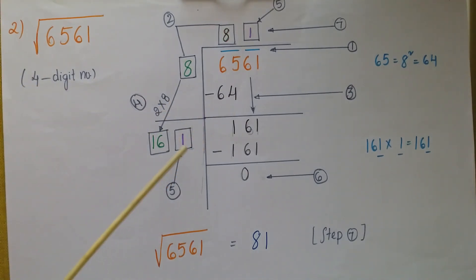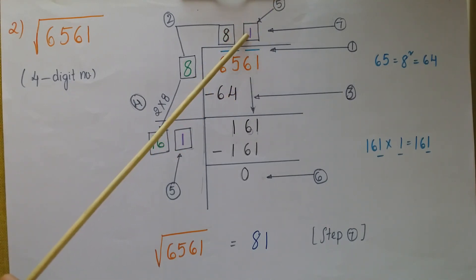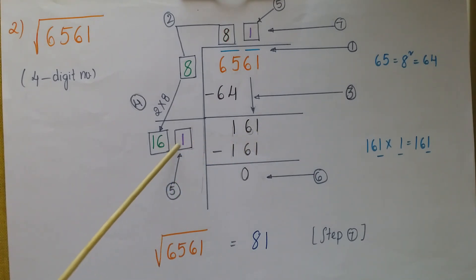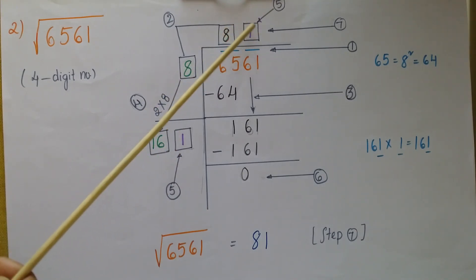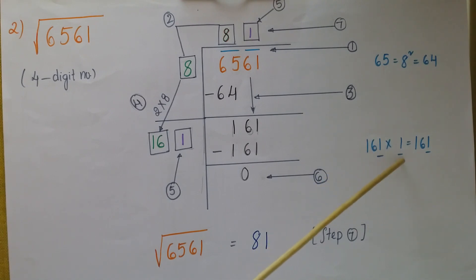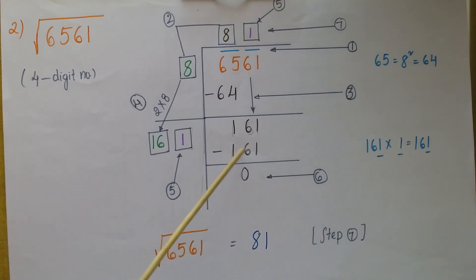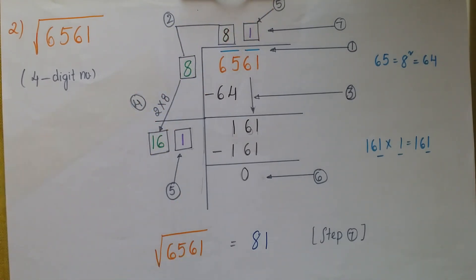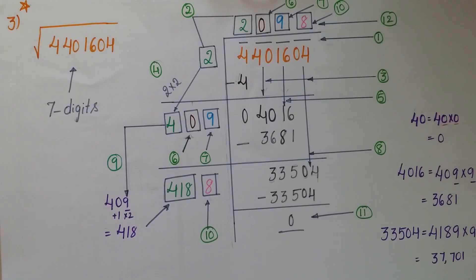Now find a digit to append to 16 in the divisor and write the same digit in the quotient, such that the product is less than or equal to 161. The last digit of 161 is 1, so try 1: 161 × 1 = 161. Write 161 and subtract — the remainder is 0. The quotient 81 is the square root of 6561.